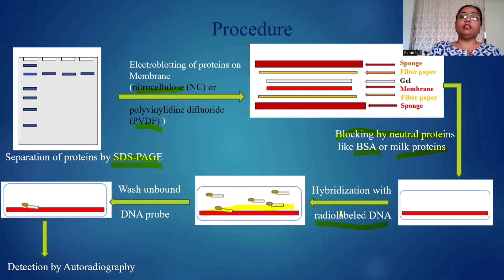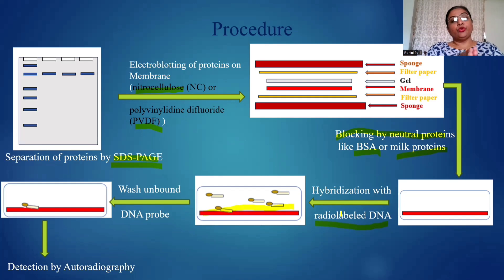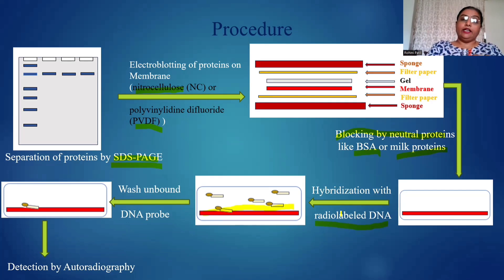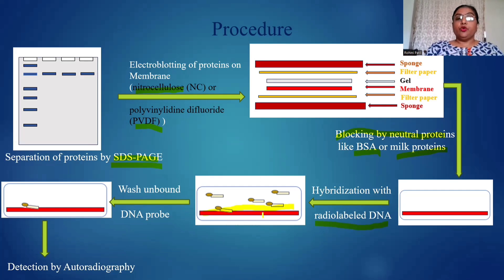When you are going to separate the proteins on the SDS-PAGE, you are going to use probes and those probes are DNA. And when you are going to separate out the DNA, you have to use labeled proteins for the identification of the DNA. So you are allowing it to hybridize — there will be an interaction between the DNA and the protein.